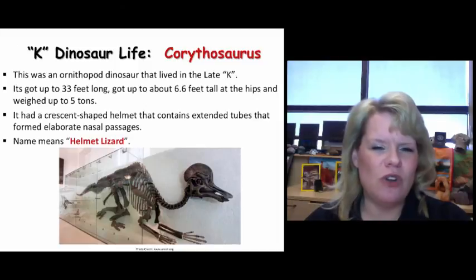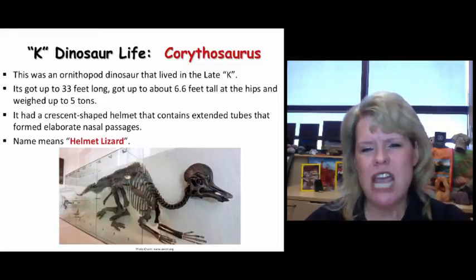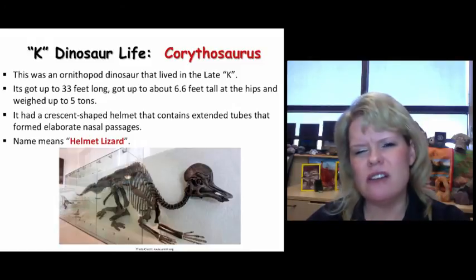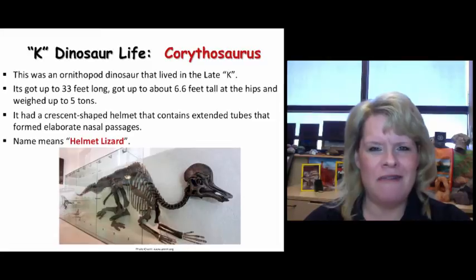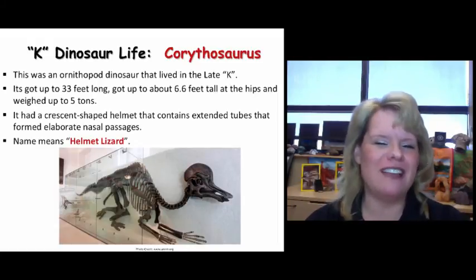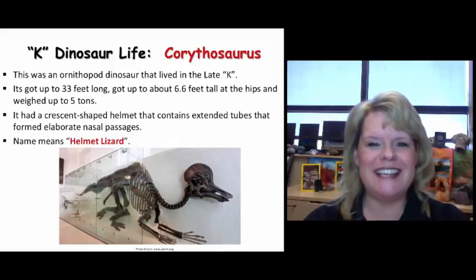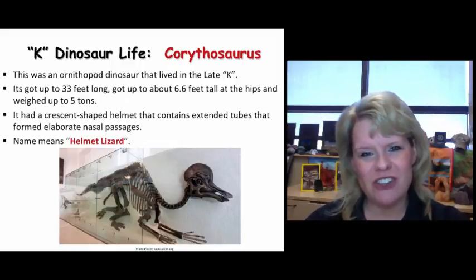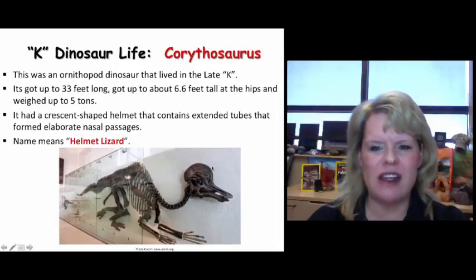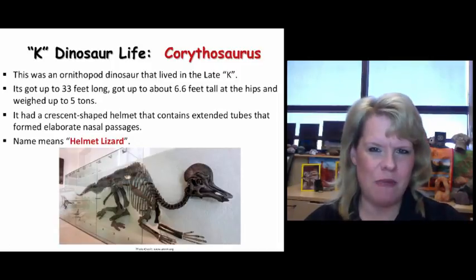Corythosaurus is an interesting ornithopod dinosaur — a type of hadrosaur that lived in the late Cretaceous period. These guys were no runts: up to five tons, 33 feet long, and pushing six and a half feet at the hips. They have a special feature that sets them apart — a crescent-shaped dome like a helmet on their head, with extended tubes that formed very elaborate nasal passages. All hadrosaurs are herbivorous, so Corythosaurus would have been as well.